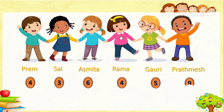Tell me whose name has maximum — more — alphabets. Very good: Prathamesh! His name has nine alphabets — that is maximum. Whose name has minimum, less alphabets? Very good: Sai! Sai's name has only three alphabets. Very nice.